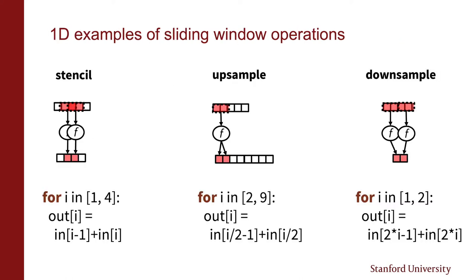To put code in your head for these applications, here are three one-dimensional examples of the three most common kinds of sliding window operations: stencils, up samples, and down samples. In a stencil, we take a 2x1 window and produce an output pixel, then step over by 1, so the output is the same size as the input. In an up sample, each application to a 2x1 window produces multiple output pixels, corresponding to a fractional stride. A down sample has a stride larger than 1, skipping potential output windows to produce an output smaller than the input.